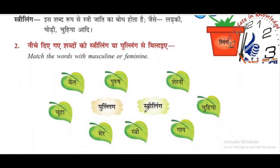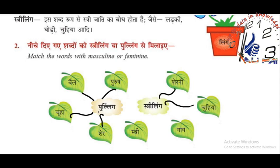Now let's go to the exercise. They have given two groups of words and we are going to select whether each is masculine or feminine. First group — masculine: 'Bile' (hog) is masculine; 'Bruce' is masculine; 'Chuhka' (rat) is masculine; 'Sheer' (lion) is also masculine. Now the feminine part: 'Cherni' (lioness), 'Chuhya' (female rat/mouse), 'Gay' (cow), and 'Three' (woman) — these are all feminine words.